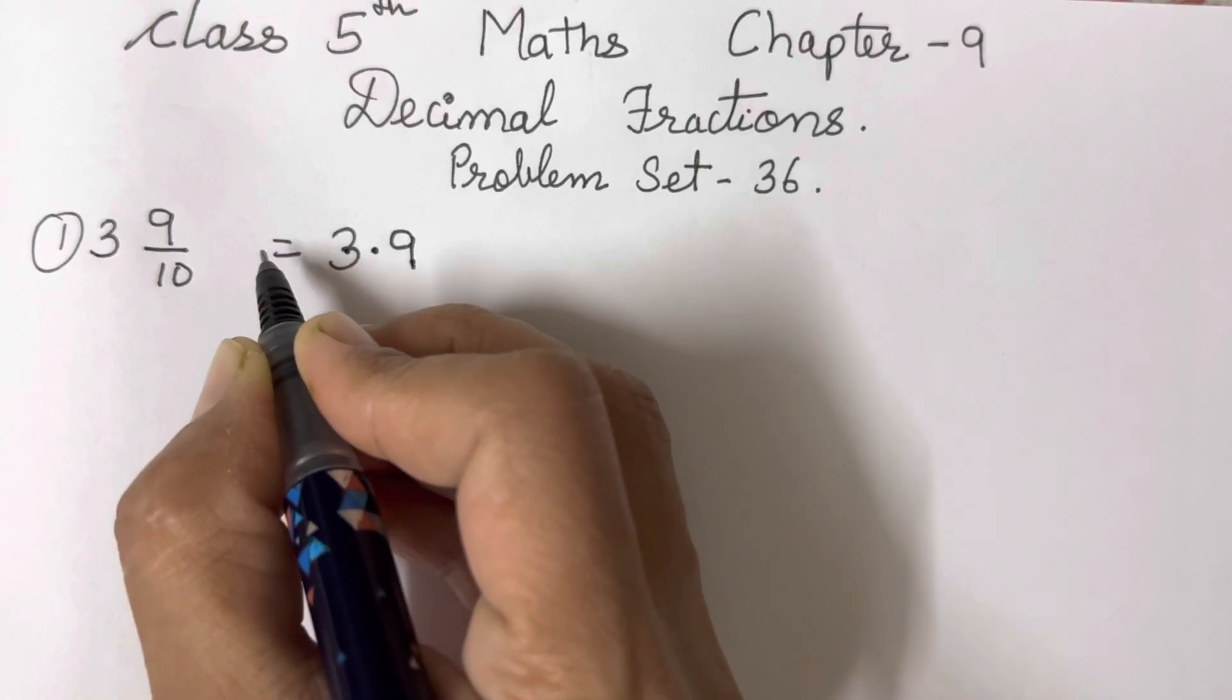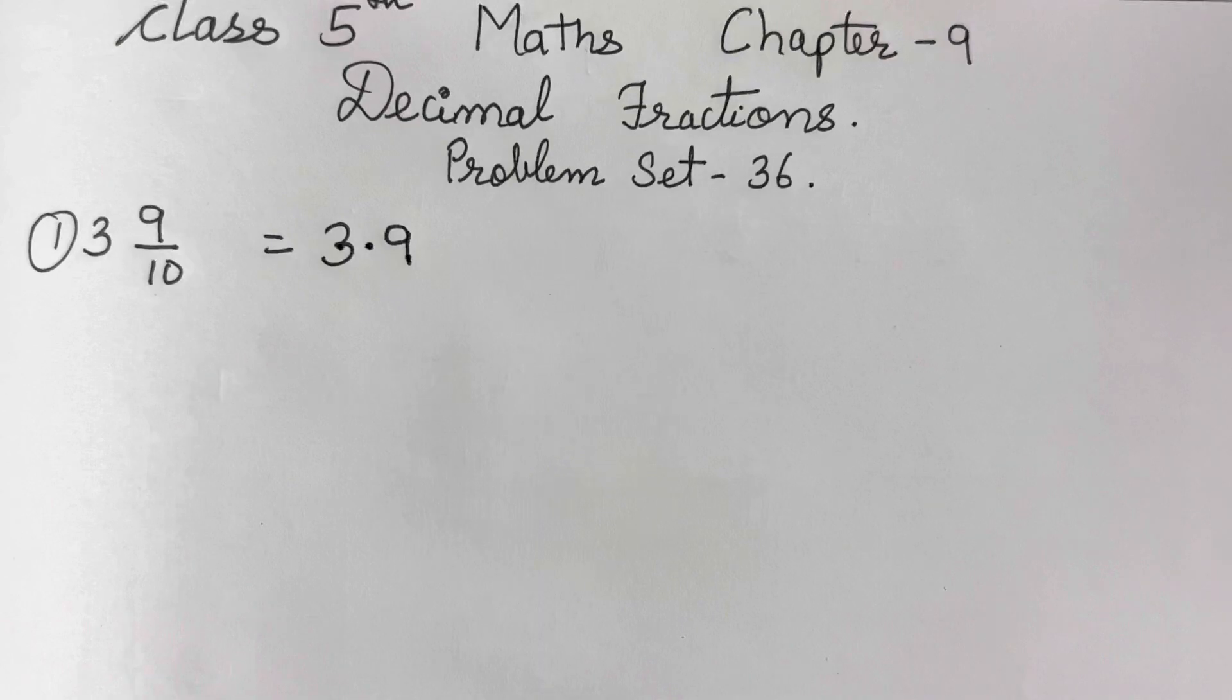The first sum was 3 and 9 upon 10. So as I said, 3 will come before decimal point, then decimal point, then 9 will come, because this is supposed to be unit and tens. This is unit, and after that tens, hundred.